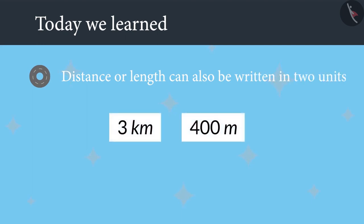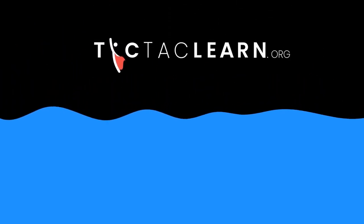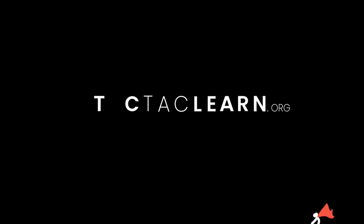Today you learned that distance or length can also be written in 2 units, example 3 kilometers 400 meters. Values of 2 lengths can be added or subtracted only when they are written in a single unit.